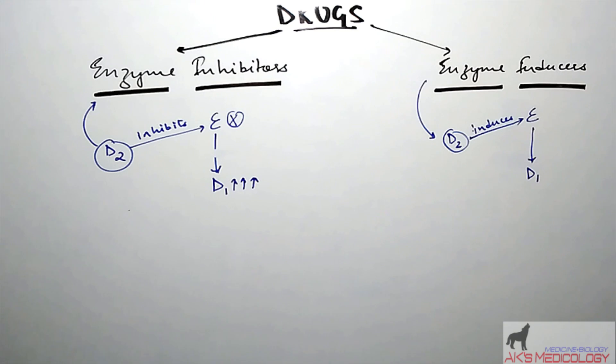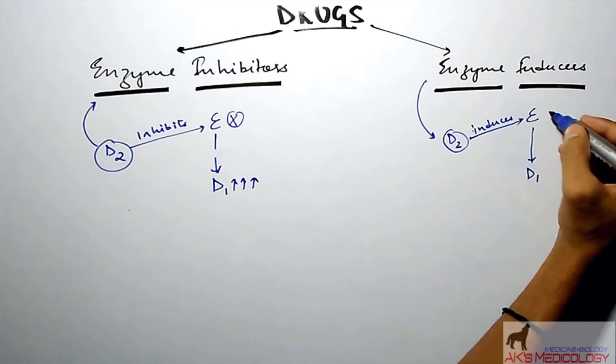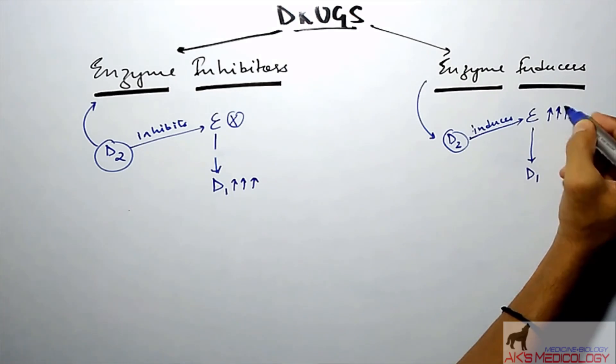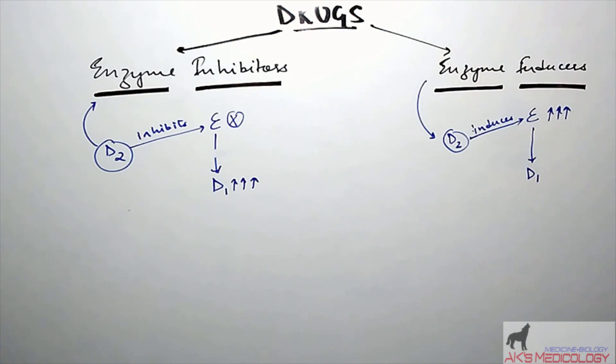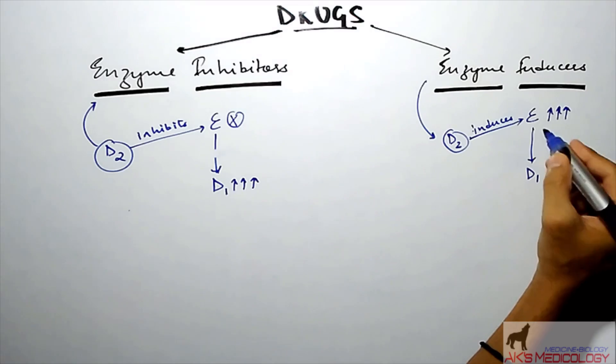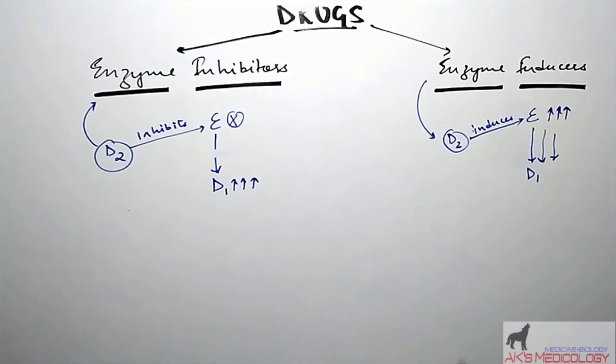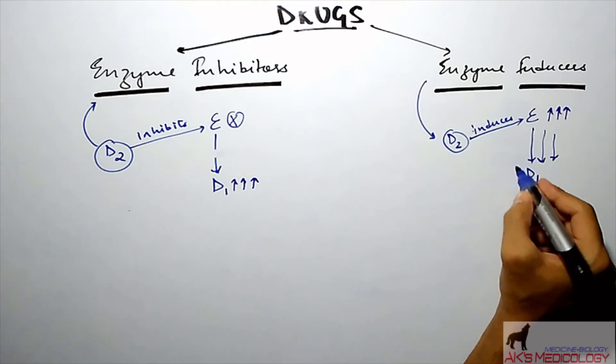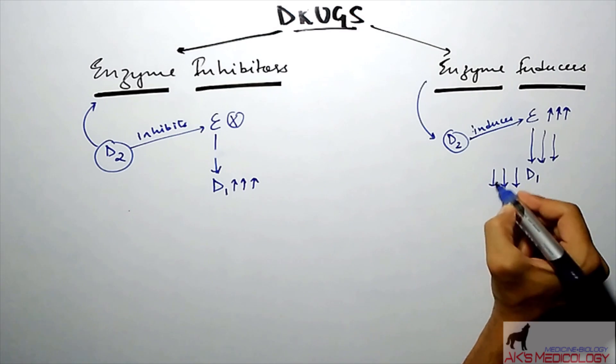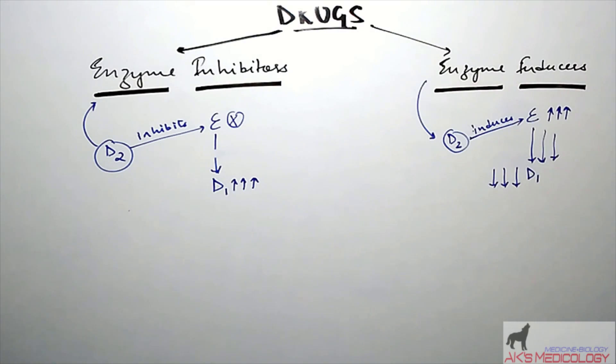This results in increased function and efficacy of the enzyme E, which leads to faster metabolization of the drug D1, which ultimately leads to decrease in the amount of drug D1 in the body. This obviously would lead to lower effects of the drug D1 which it is supposed to produce.